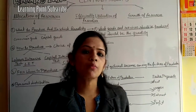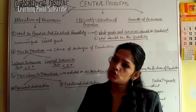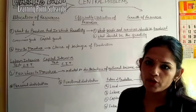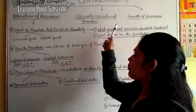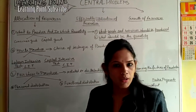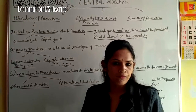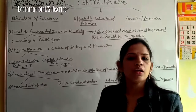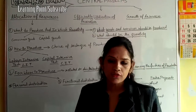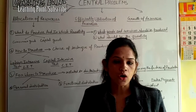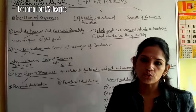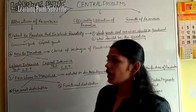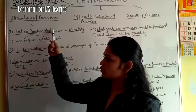So, in this video we have discussed the central problems. We first discussed economic problems, then the causes — unlimited wants, limited resources, and alternative uses of resources. We also discussed the allocation of resources and its three types.